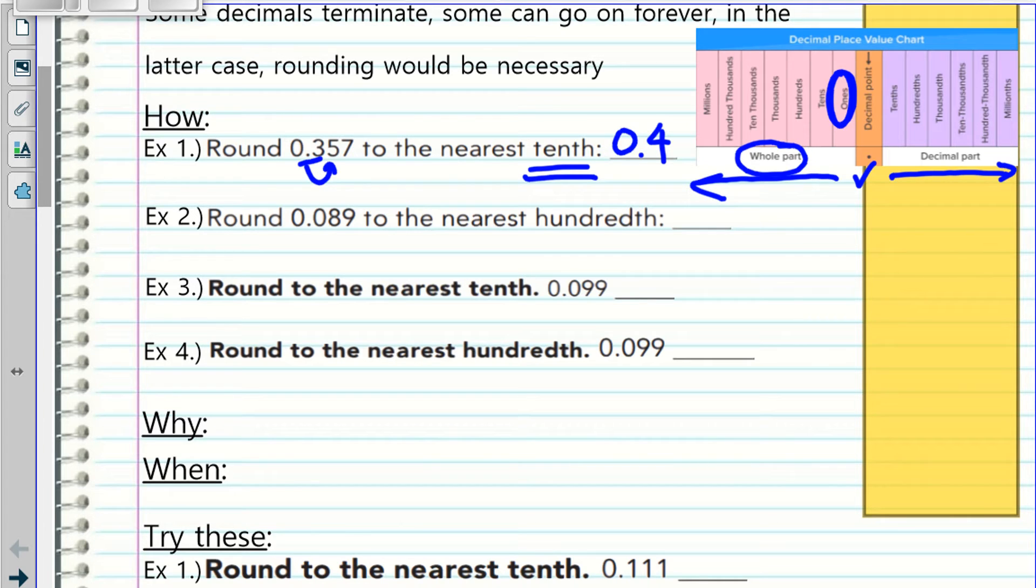Same thing, round 0.089 to the nearest hundredths. Same strategy. Where's the hundredths? Tenths, hundredths, that's the underline. Draw an arrow so that you look at the number before that. That's a nine. So what does that tell you? 0.09.